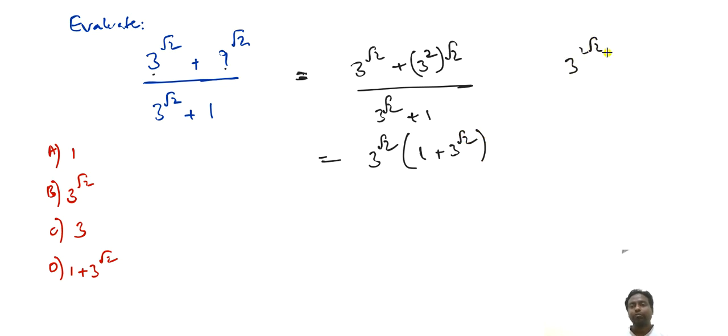Why is that? Because 2 raised to 2 means 3 raised to 2 plus root 2, it is basically twice. Now upon simplification this goes out, so your answer is 3 raised to 2, which is option B.